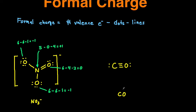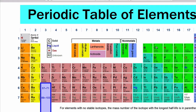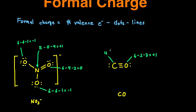Next we have carbon monoxide, CO, and this is the Lewis dot structure. We're going to use the formula to figure out the formal charge of each atom. For oxygen: six valence electrons minus two dots minus three lines, giving us a formal charge of positive one. For carbon: it has four valence electrons — carbon is in the fourth column of the periodic table — minus two dots minus three lines, giving us a formal charge of negative one. We can confirm this is correct because negative one plus positive one gives us the overall charge of zero, since carbon monoxide is neutral.